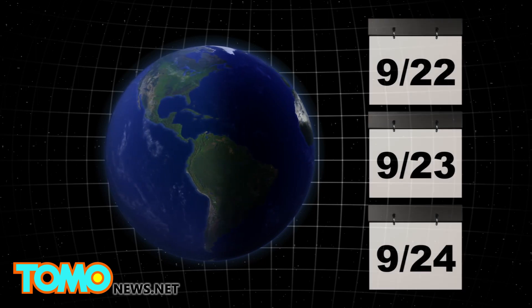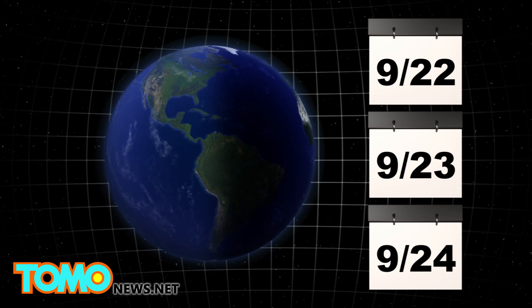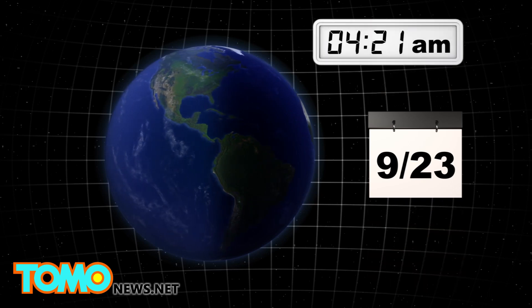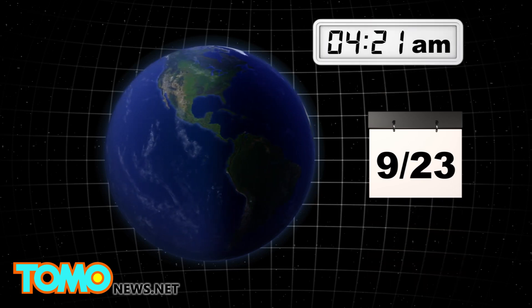The autumnal equinox usually occurs on September 22nd, 23rd, or 24th. In 2015, it happened on September 23rd, at 4:21 a.m.